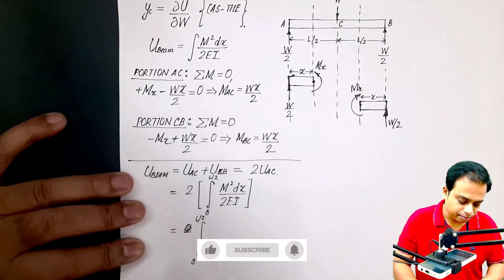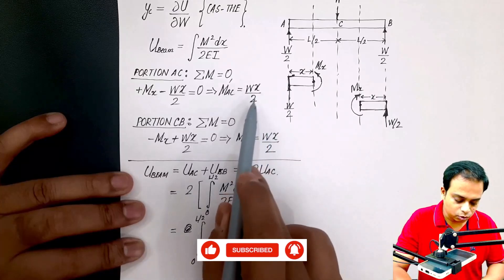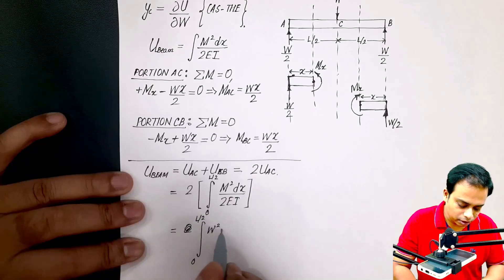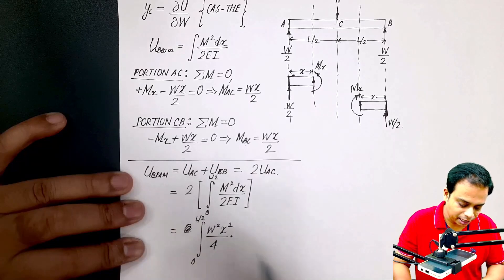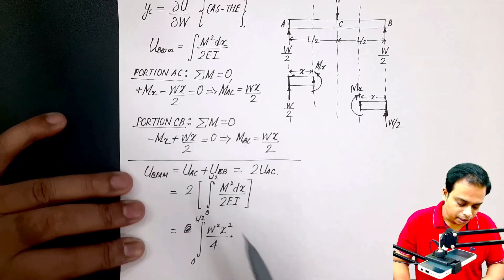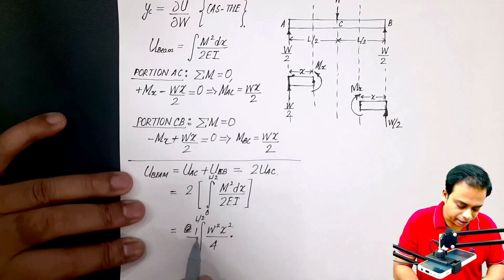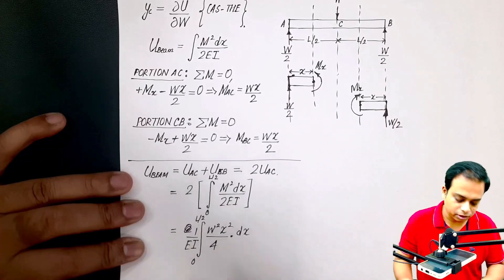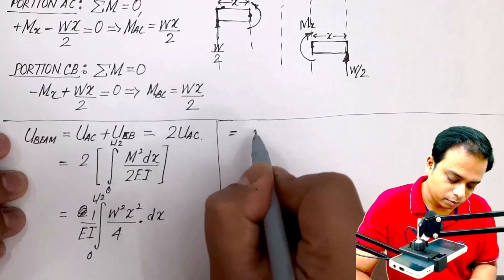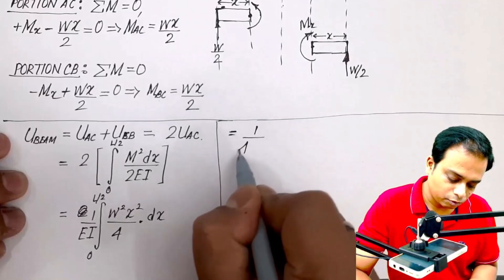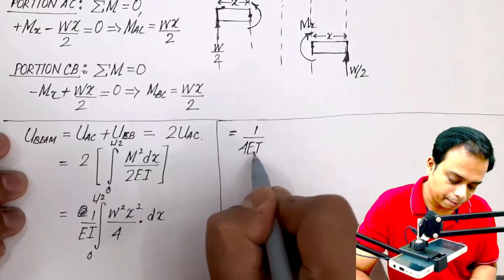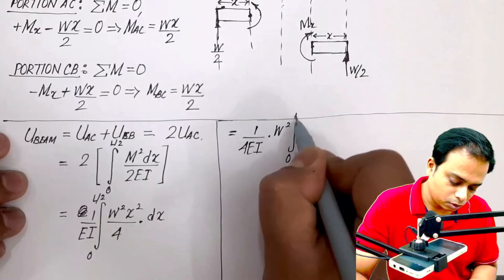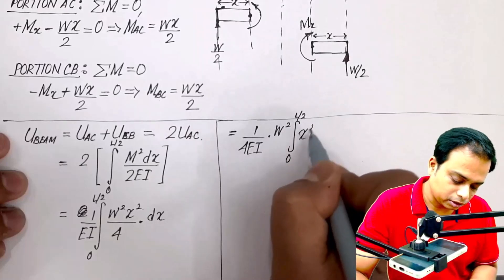This entire beam, this is L by 2, and this over here is L by 2, so that the total length of the beam is L, right? So the limits are going to be from 0 to L by 2. Now you are just left with this expression: 0 to L by 2, and then there is the same M squared, that is W squared x squared by 4. Let me write this: W squared x squared over 4 multiplied by EI.